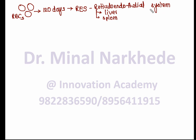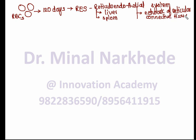The reticulo-endothelial system (RES) is made up of two main components: a network of reticular connective tissue, and phagocytic cells within that tissue. The main phagocytic cells found in this system are monocytes and macrophages.